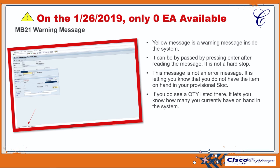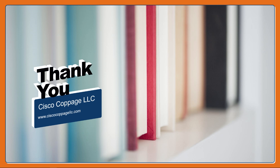This message simply lets you know that you do not have any of what you are trying to order on that date in your provisional storage location — hence why you are trying to order it. If this is your first time placing an order in the system, you will get a message letting you know what you have on hand. If you do see a quantity listed, for example 10 each, that simply means you already have 10 of those items on hand.